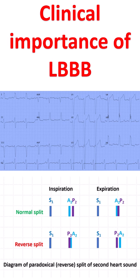LBBB is one cause for paradoxical splitting of the second heart sound. Normal splitting closes in expiration. In paradoxical splitting, the split is audible in expiration and closes in inspiration.